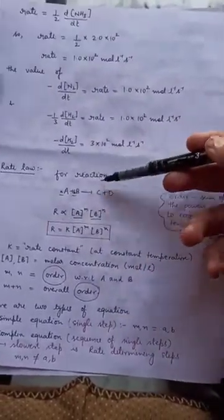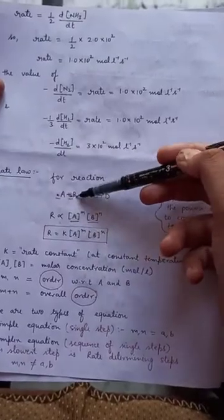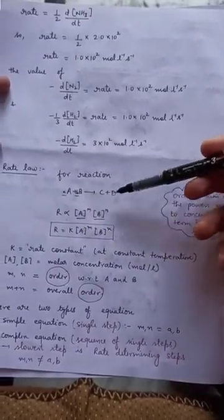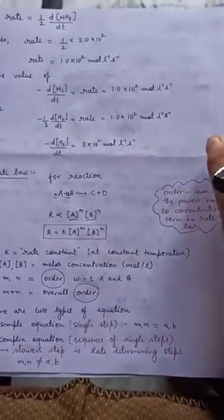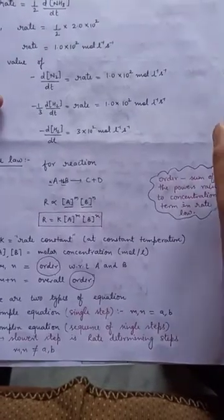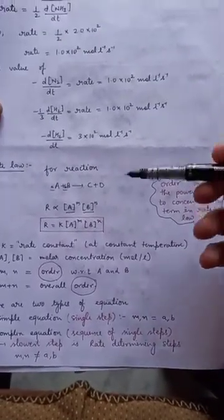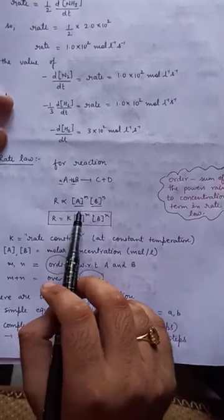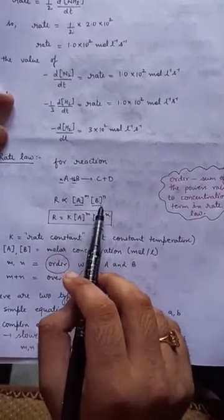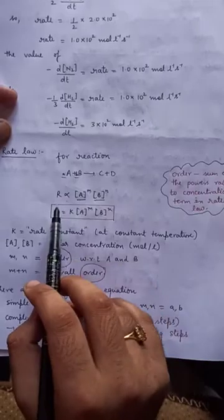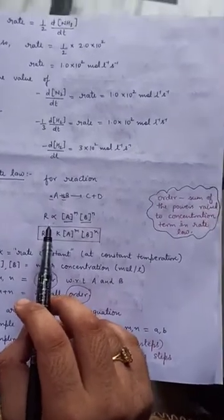Consider a reaction: A moles of A plus B moles of B gives out C and D. For expressing the rate in terms of reactant, R is directly proportional to A to the power M and B to the power N.